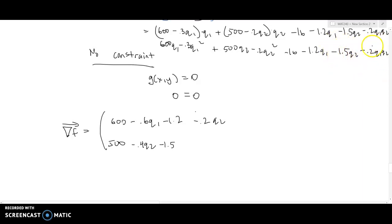We want to set that equal to lambda times the gradient of g. Now if we take the derivative of 0, we're going to get 0, and if we take the derivative of 0 with respect to a different variable, we're still going to get 0.